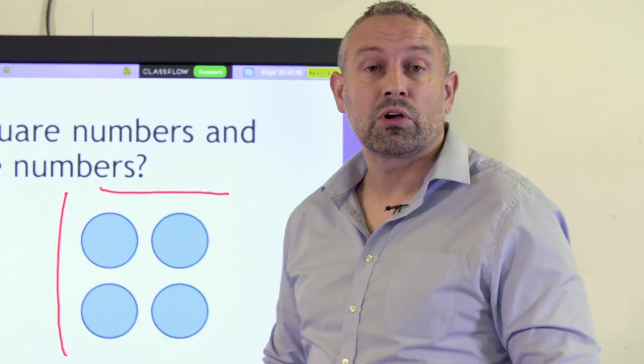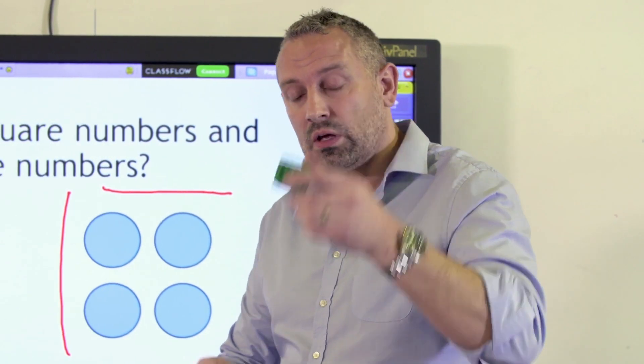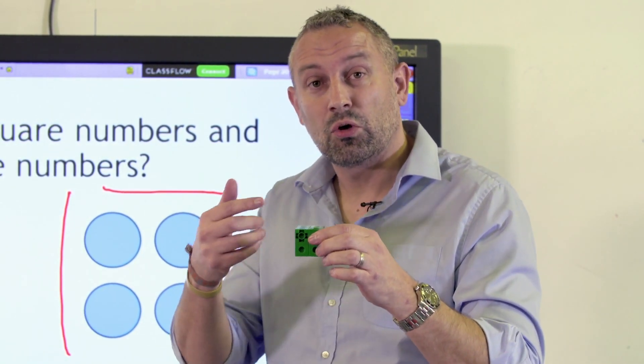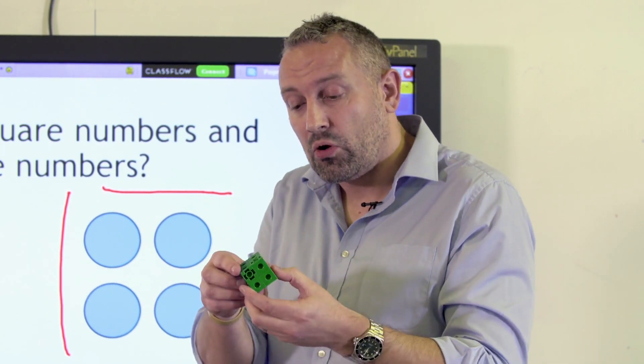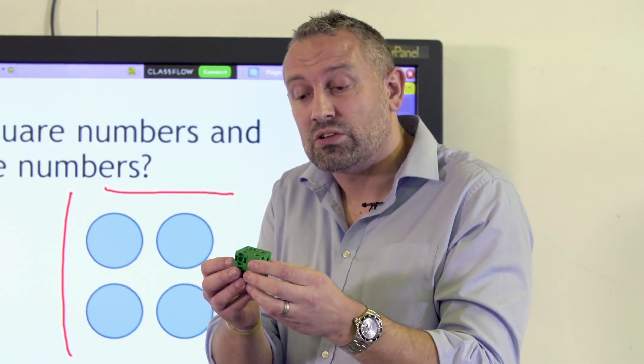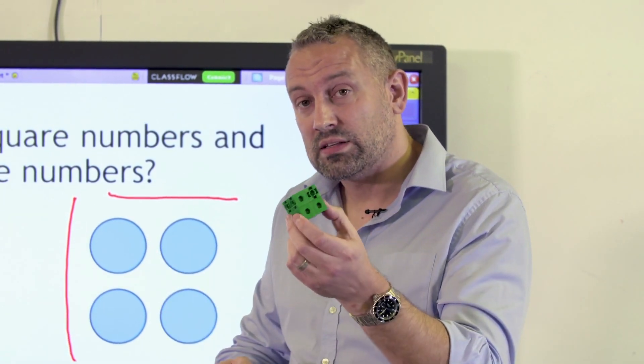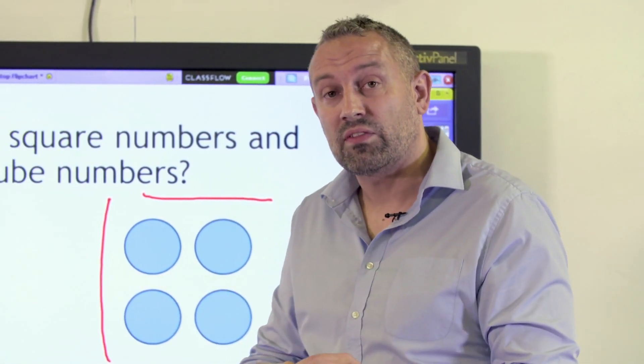To move on from that, we would look at cube numbers. So here in our cube we have 2 by 2 by 2 which is 8, and the children can explore and they can take it to pieces and they can see that 2 times 2 times 2, or 2 cubed, is 8. That's really valuable for them to have that chance.